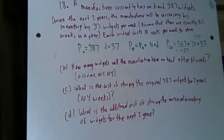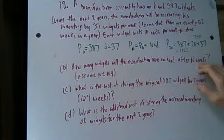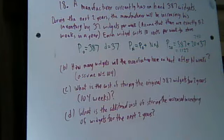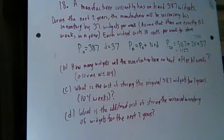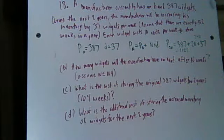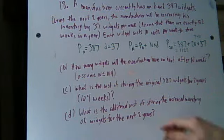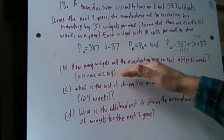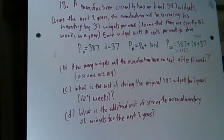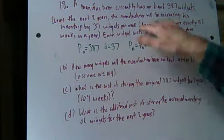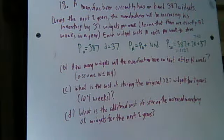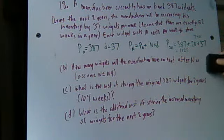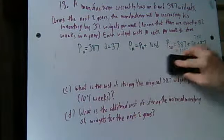Now, question B says, how many widgets will the manufacturer have on hand after n weeks? Actually, we solved that already. B really should have been the first question because you need to actually do that before you can find out. It says assume that n is less than 104. All that means is before you get to two years. So B is quite easy. We already did that one. We got that right there.